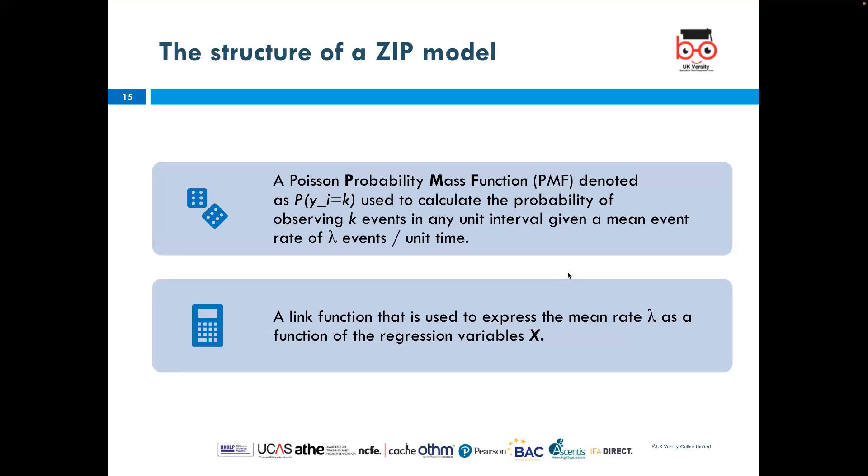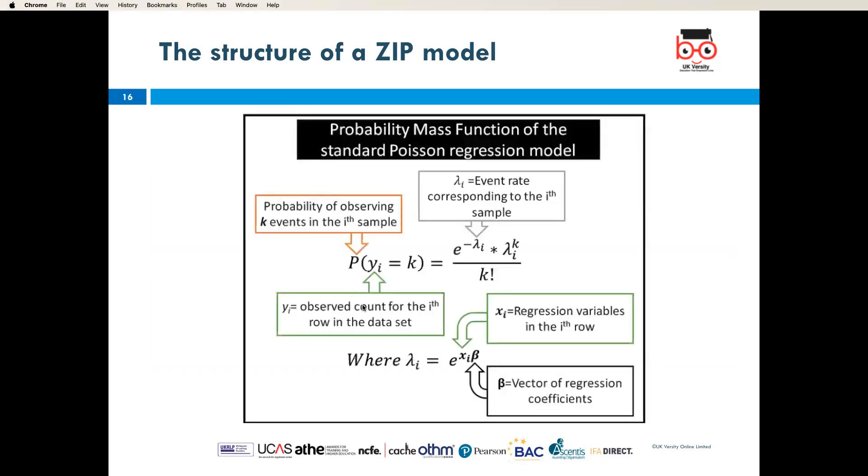The next topic is the structure of a ZIP model. The Poisson Probability Mass Function PMF is used to calculate the probability of observing k events in any unit interval given a mean event rate of lambda events per unit time. A link function that is used to express the mean rates lambda as a function of the regression variable X. This is the structure of a ZIP model. We have a mass function of standard Poisson regression models, this is the formula that you have to know. We can also Google it.